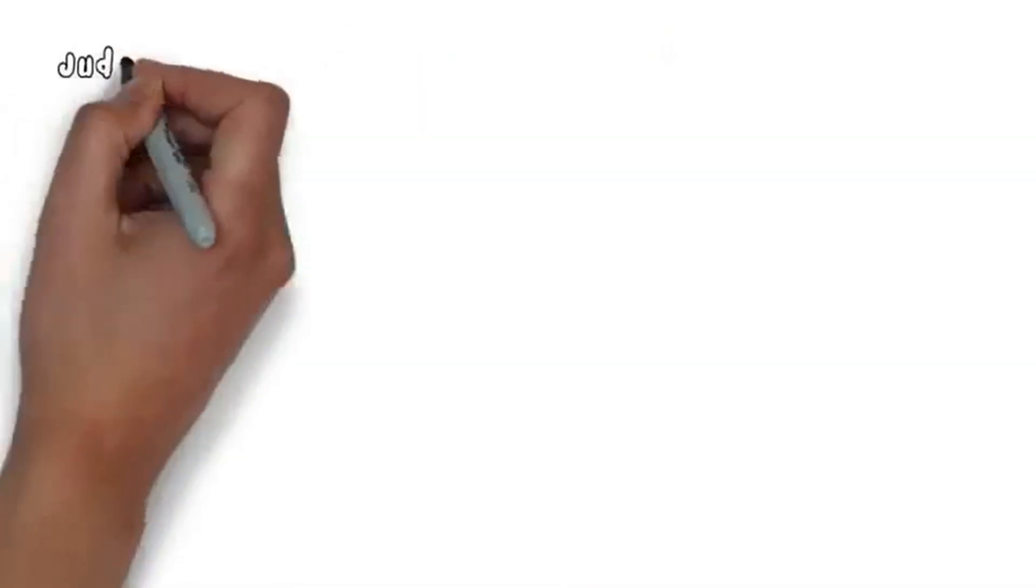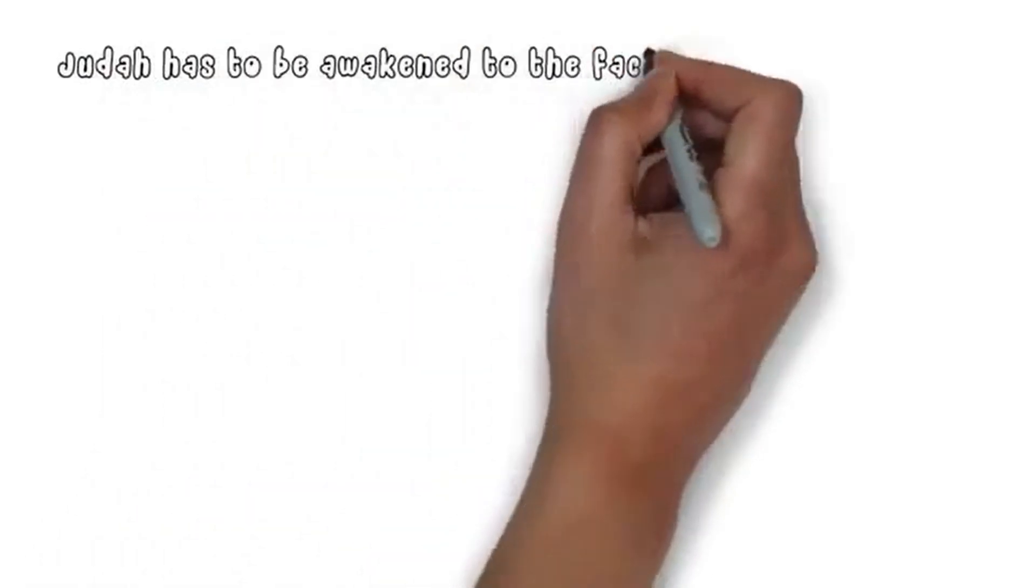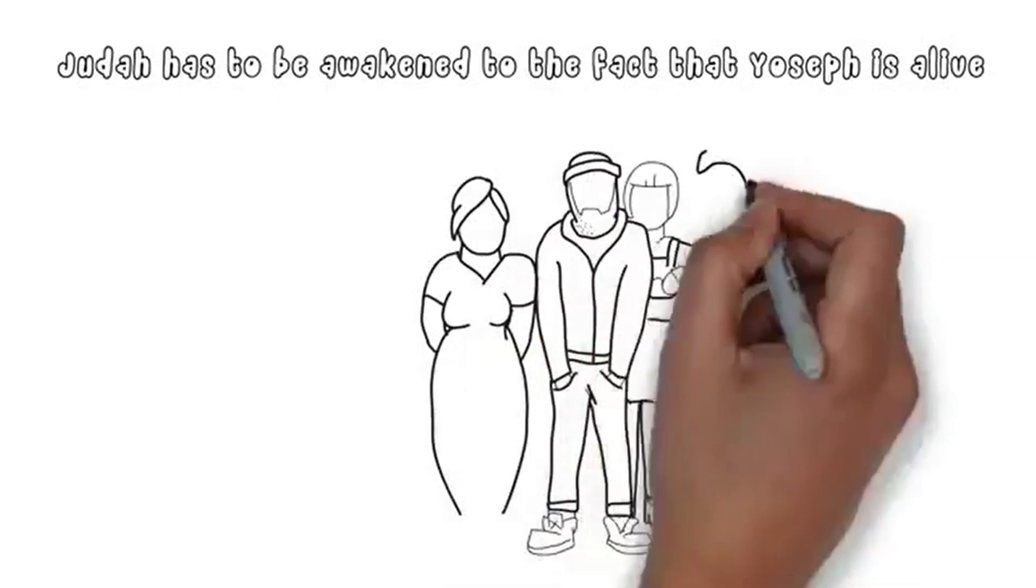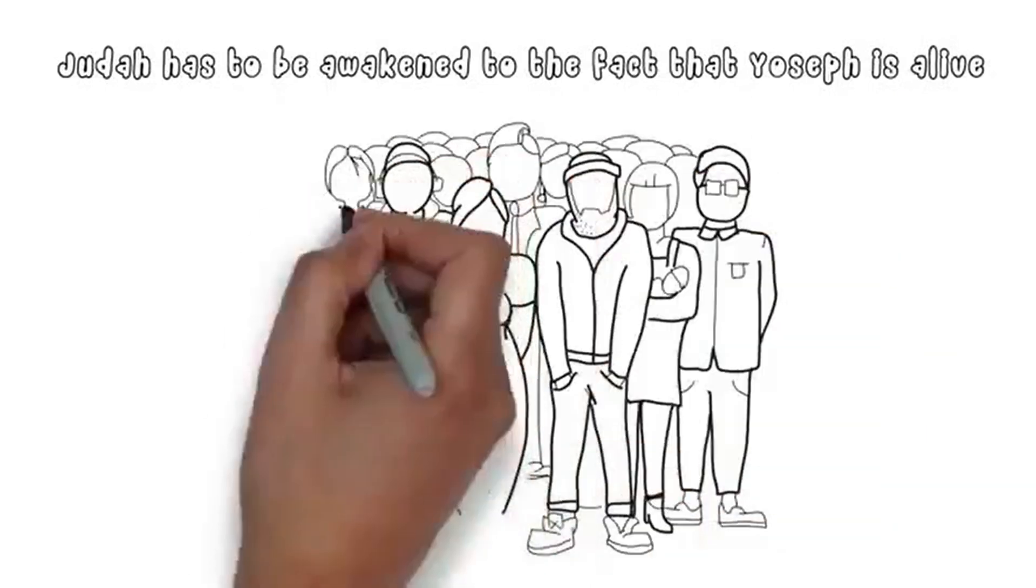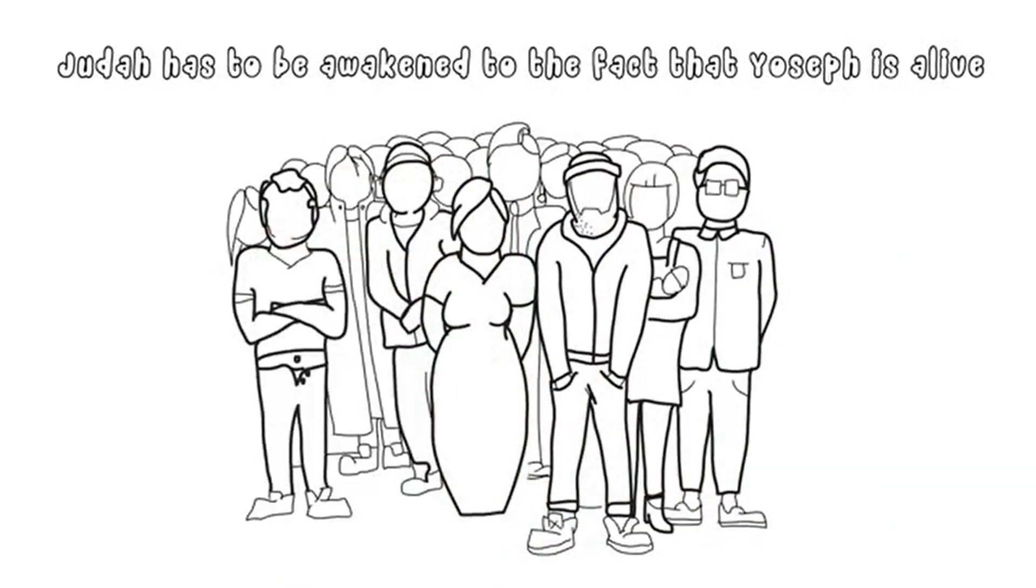The solution? Judah has to be awakened to the fact that Yosef is alive, but it cannot do so because the Ephraim body is disjointed and unidentifiable through internal division.